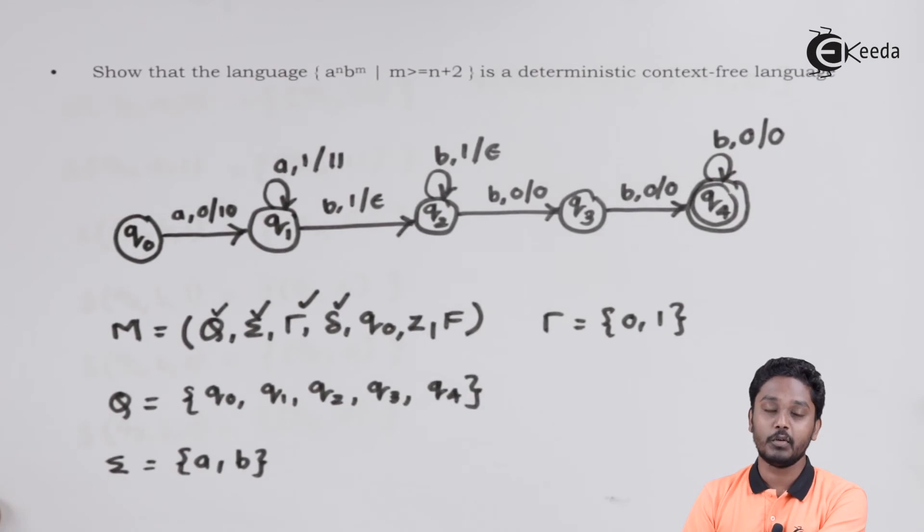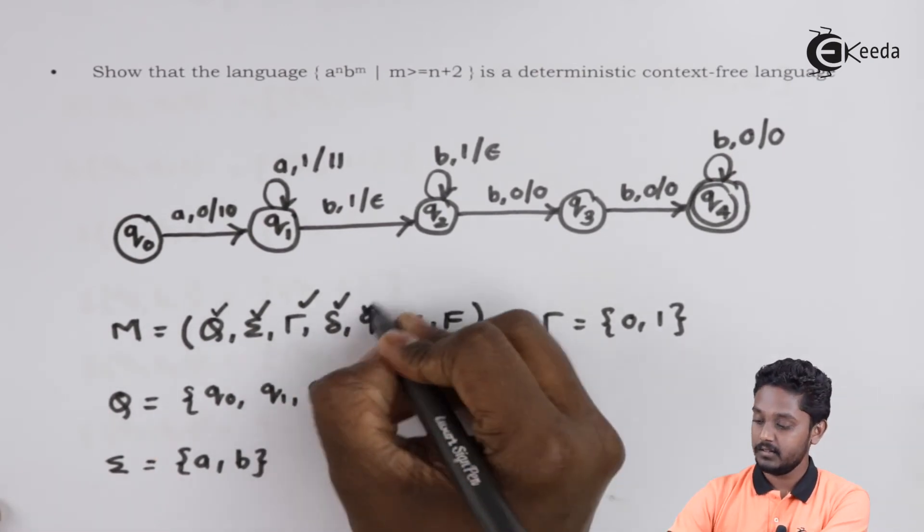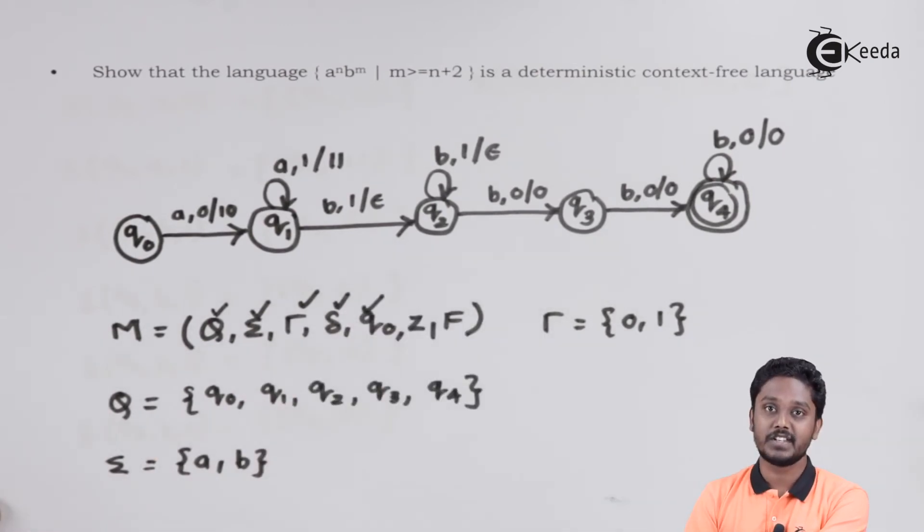Over here Q0 is the initial state, initial stack symbol Z is taken as 0, so Z will be 0. We have only one final state, Q4 and hence, F will contain only Q4.